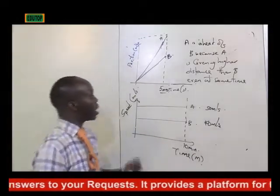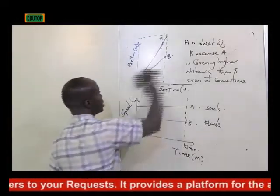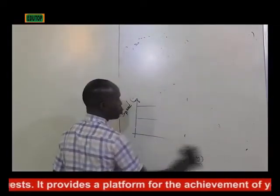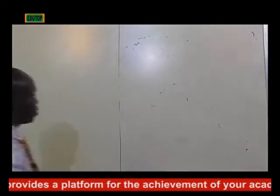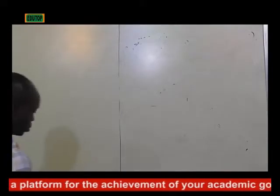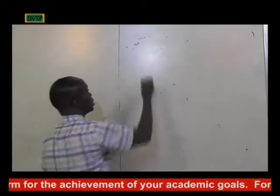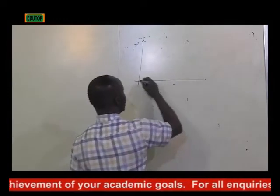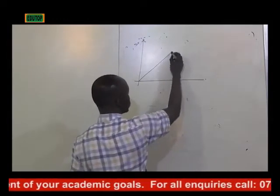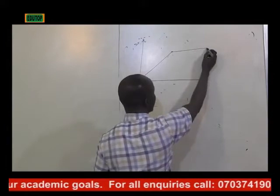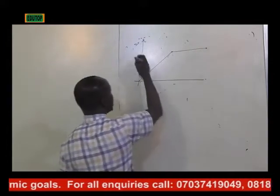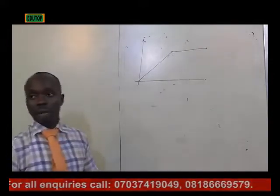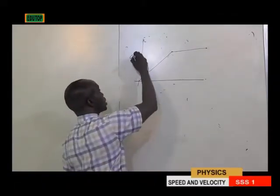Now let's look at another thing: how do you calculate distances from your graph? If you have a graph of this nature where the body goes this way, stops here, and then proceeds here — this is a speed-time graph.